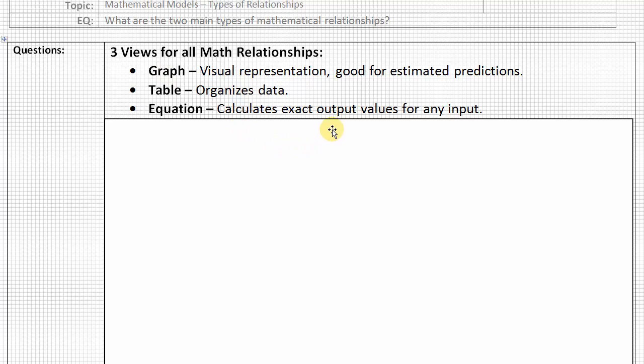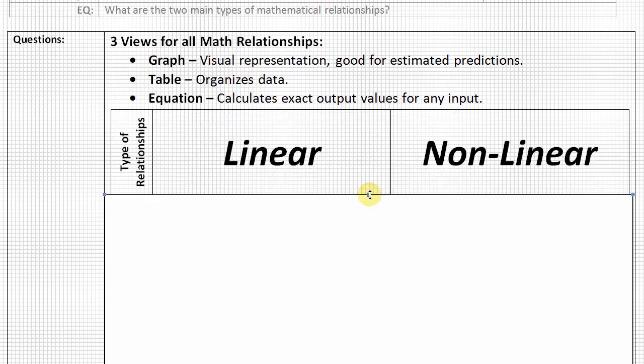So we want to talk about the two main types of relationships, and we're going to look at those two main types in their graph, table, and equation forms. So the two main types of relationships in math are that we have either linear relationships or we have nonlinear relationships. And so in each of these different views, the graph, the table, and the equation, we want to be able to look at it and say, I can tell that it is this type of relationship and it's going to be either linear or nonlinear.